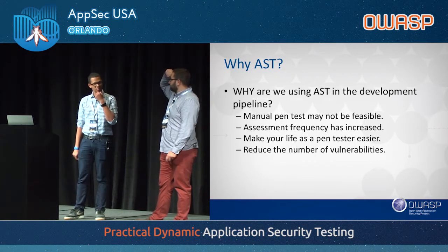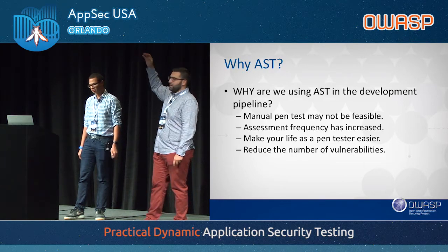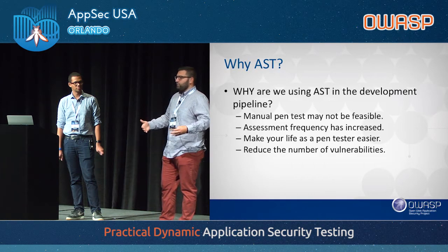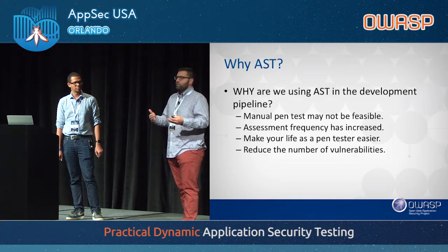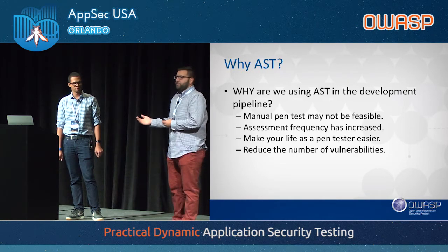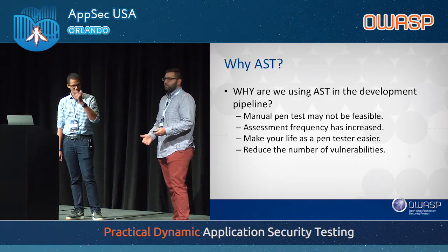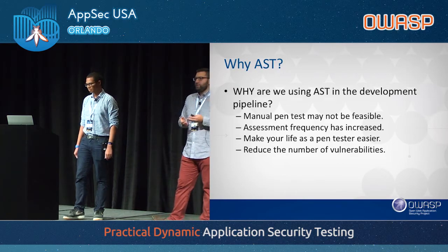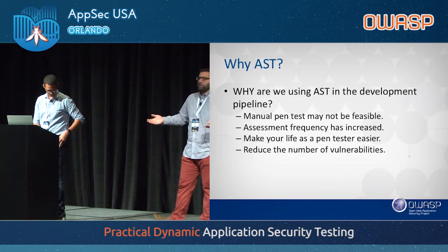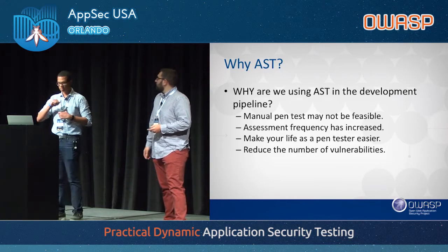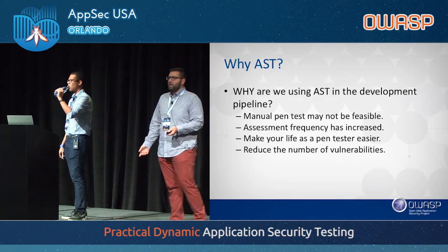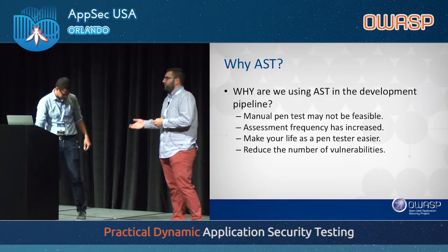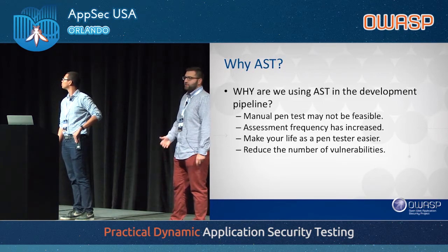So why would you use AST? Manual pen testing has not been feasible for quite some time — the features are rolling out so fast. If you're having multiple releases a week, you can't pull a tester out to test every small feature each time. The frequency has increased; before I might test one application once a week, now it's three or four times. So why not automate what you can and push a lot of this to the development side?